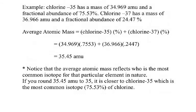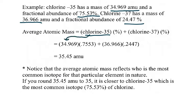Here's a sample problem. Chlorine has two isotopes. Chlorine-35 has an actual mass of 34.964 atomic mass units and exists 75.53% of the time — that's its percent abundance. The other isotope, chlorine-37, has a mass of 36.966 AMU and a percent abundance of 24.47%. When you add the two percents, since there are only two isotopes, they should add up to 100.